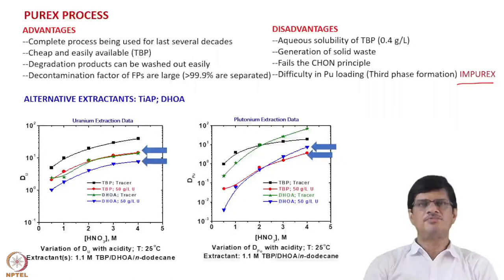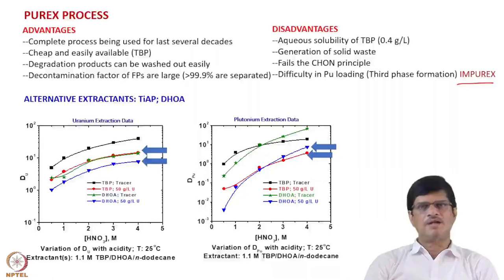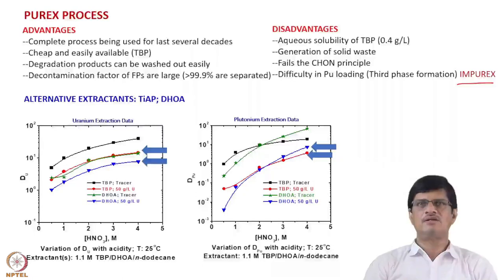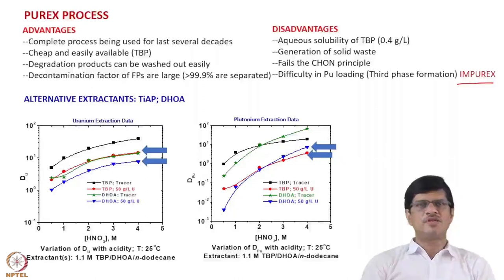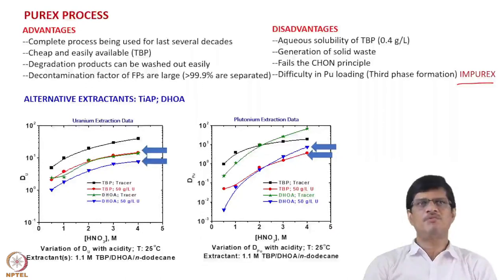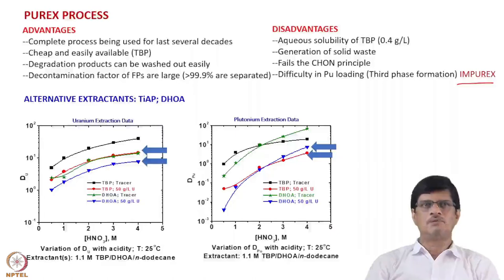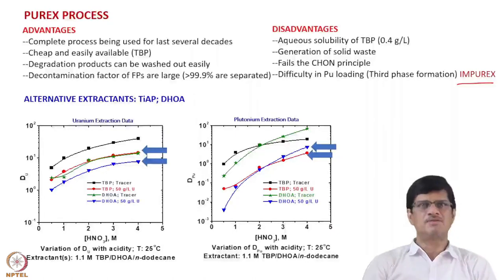Another alternative is to use longer alkyl group phosphates, such as tri-isoamyl phosphate (TIAP), which has been tested in different laboratories and shows much higher plutonium loading with less third phase formation. Finally, there are dialkyl amides like DHOA (dihexyl octanamide), which has been found to be one of the most useful extractants in place of TBP, with significant research carried out by French researchers suggesting DHOA as a possible replacement for TBP.